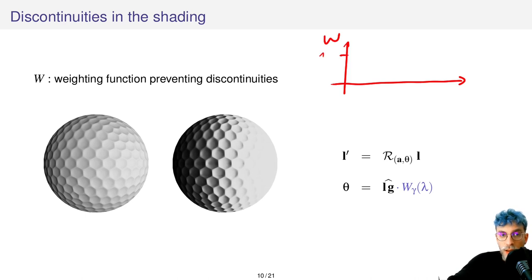So it's a top half sigmoid function that looks a little bit like this and that depends on the parameter lambda. Lambda is a confidence value between 0 and 1 that says whether we are close or not to a region that will introduce a discontinuity in the shading when we perform our rotation operation.